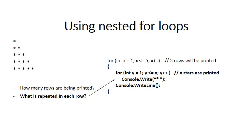What's done for each row is slightly more complicated. We see that in row one there's one star printed, in row two there are two stars, in row three there are three stars, and so on. So we can say that in row X we print X stars. Inside the first for loop there's a body that prints the stars — another for loop that goes from one to X. So in each row we print X stars, where X is the row we're currently on.